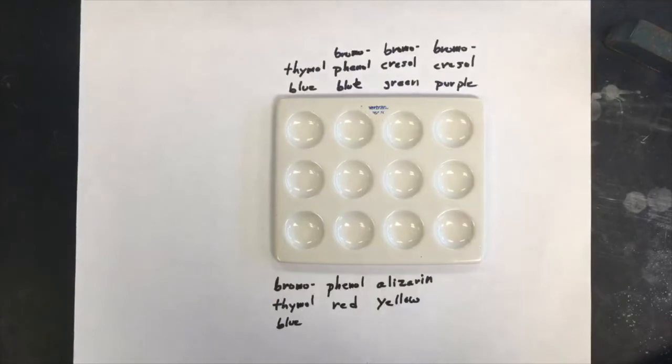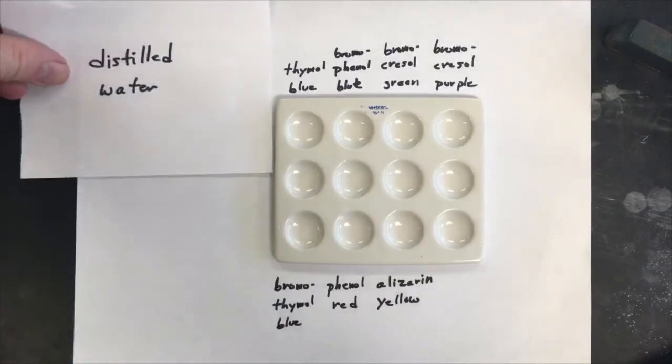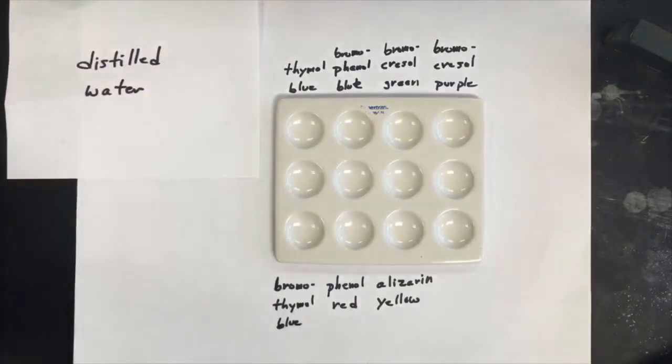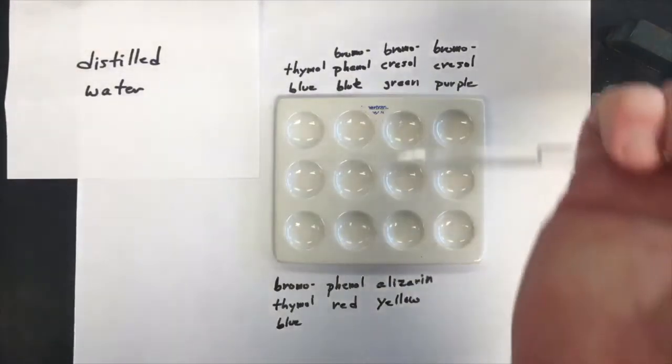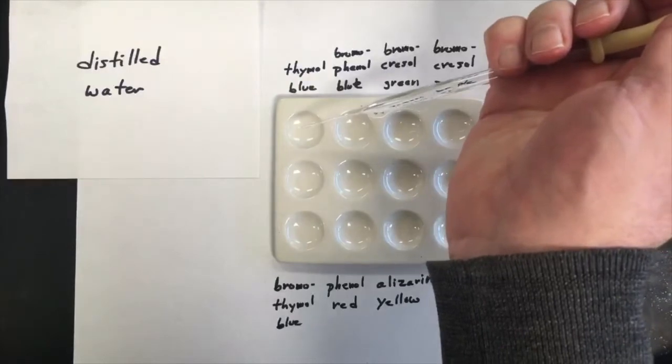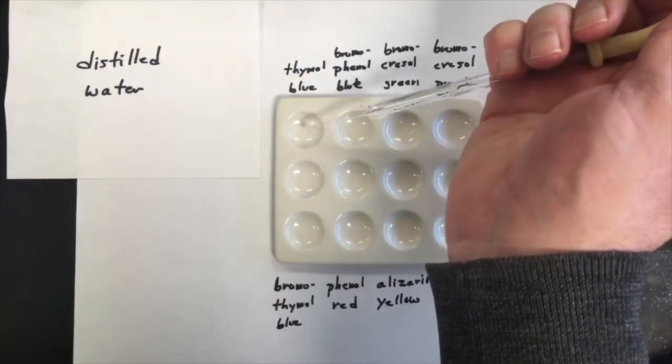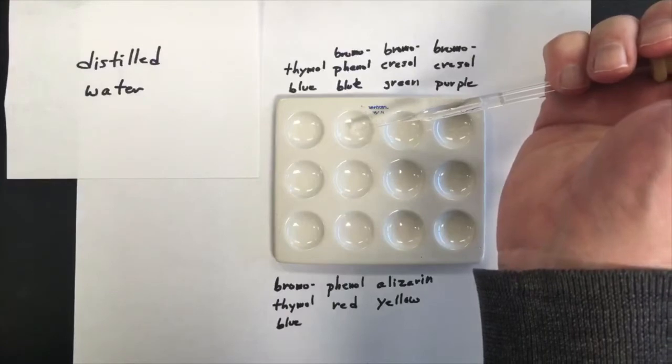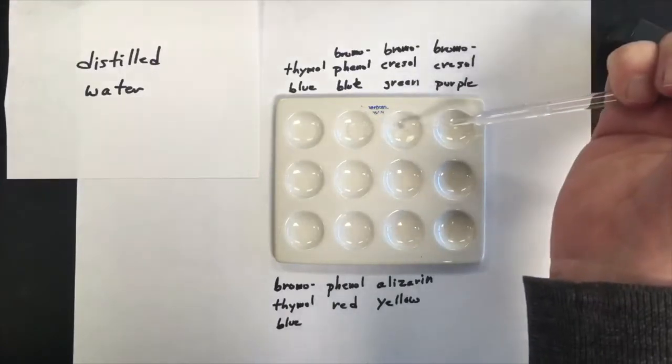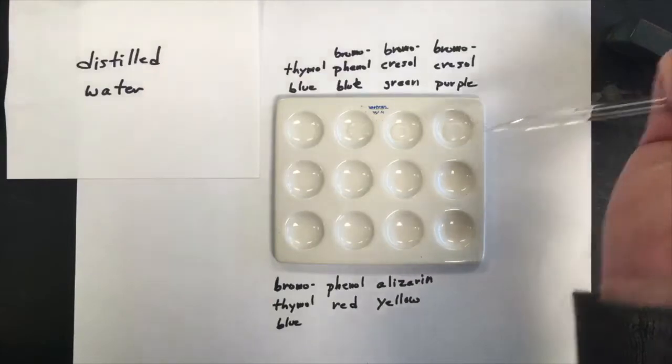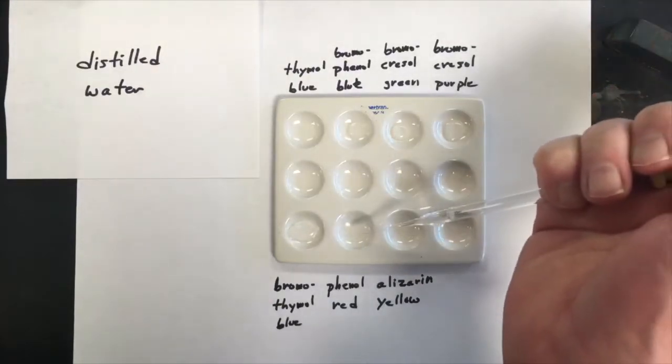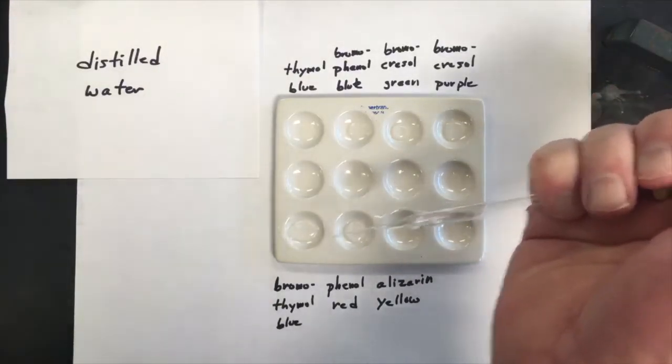So, now I'll just show you the general procedure for how I'm going to do this. For the first sample being tested is distilled water. I'll put a little piece of paper here, remind us it's distilled water. I'm going to put three or four drops of distilled water into each of the seven wells. So that's plenty.